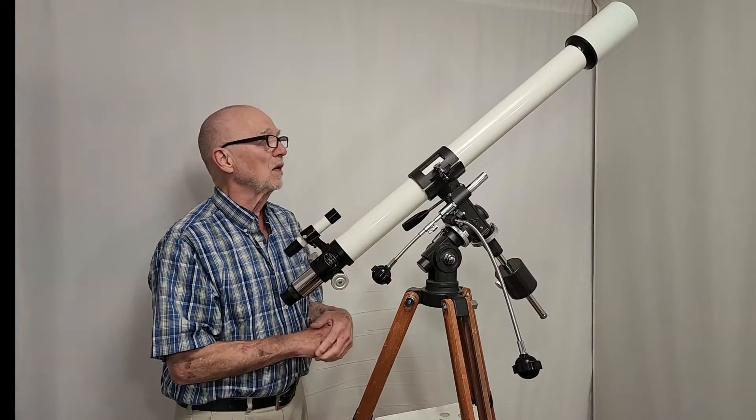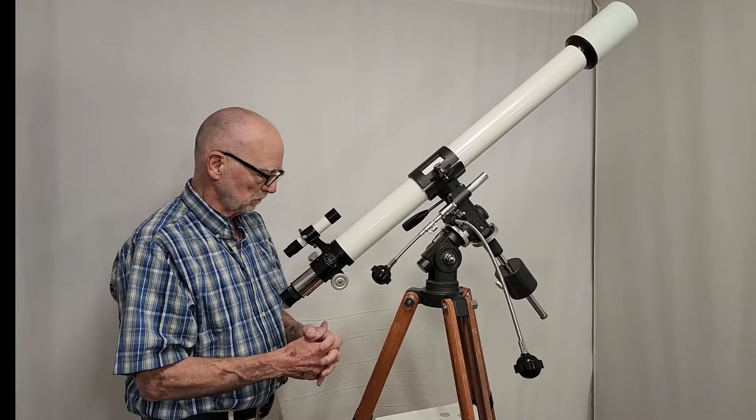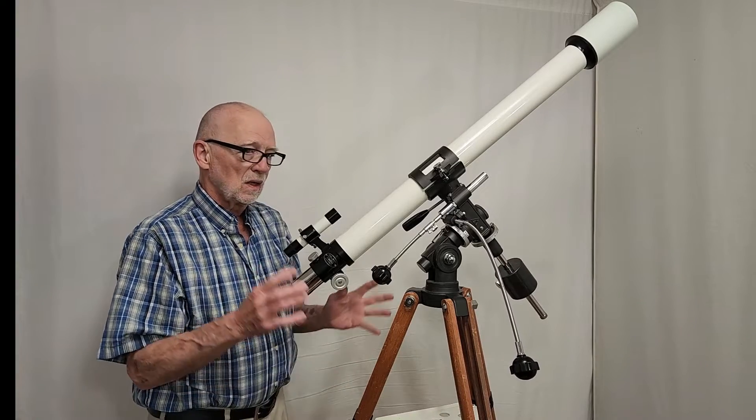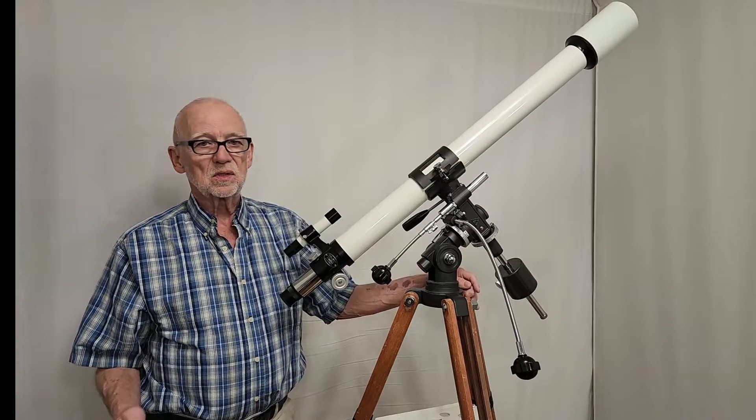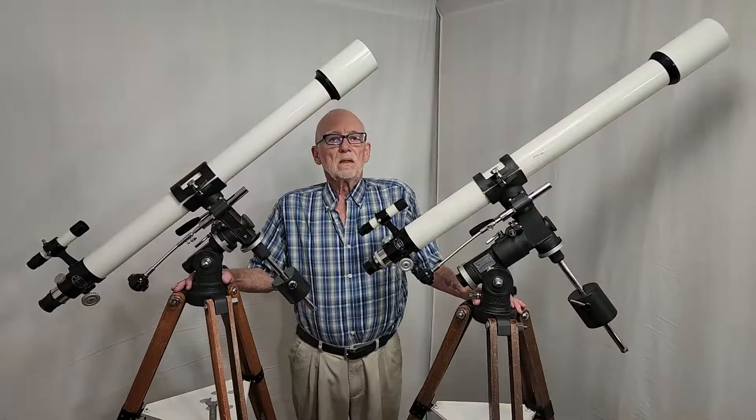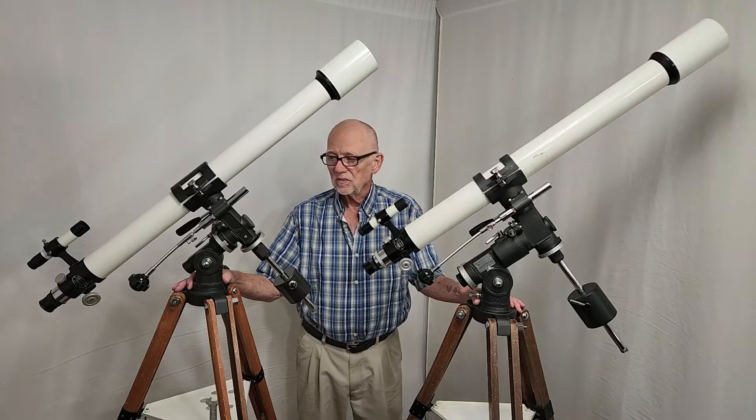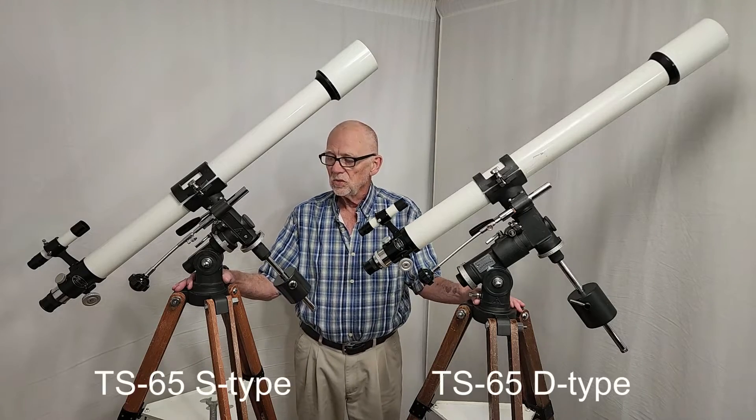I guess they just had them laying around, so why not put them in the scope? Let's do a side-by-side comparison, this scope and the TS-65 D-Type. This will give you a real sense of the difference in scale between these two scopes.